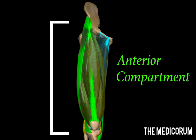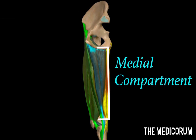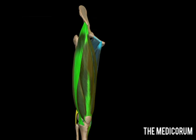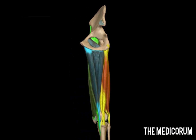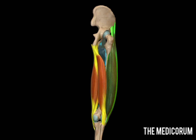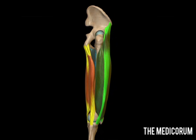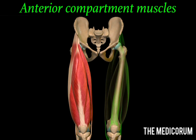The thigh has three compartments: the anterior compartment, the medial compartment, and the posterior compartment. Here you can spot all three compartments marked in different colors. Coming on to the anterior compartment.